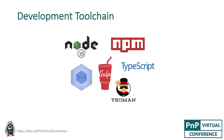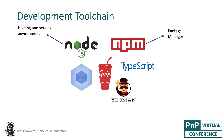And let's talk about development toolchain. As I mentioned, all the tools are web development tools, but they're pretty similar to what we had in .NET world. So, the first tool is Node.js. It's a hosting and serving environment for JavaScript projects, and it's pretty similar to ISExpress in .NET world. The next one is NPM. It's a package manager that allows you to reference or add different modules, different libraries in your projects. It's similar to NuGet package manager in .NET world.